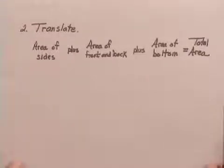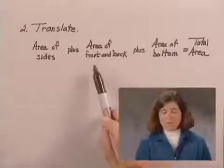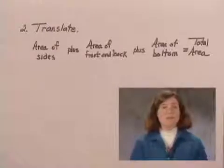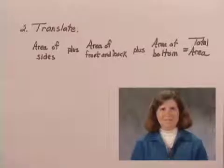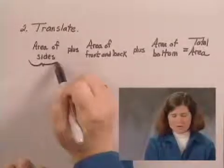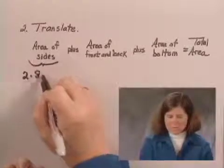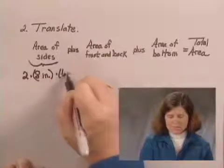To translate, we can write out what we talked about with the area. The area of the sides plus the area of the front and the back plus the area of the bottom will give us the total area of the box, which is where we are looking for how much cardboard it is going to take to make the box. The area of the sides, we said, was 2 times 8 inches times 6 inches.